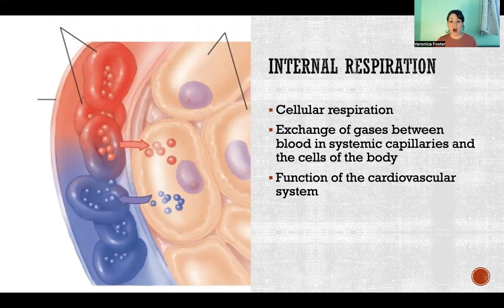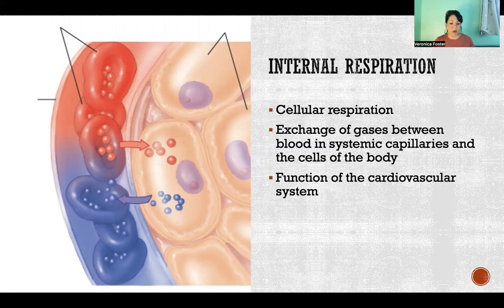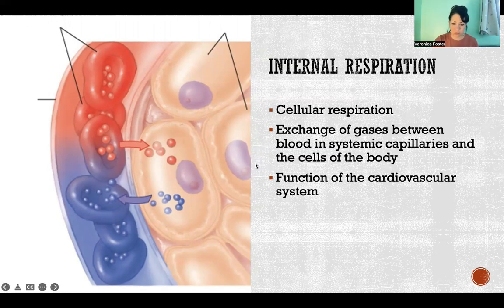Internal respiration is a function of the cardiovascular system. All three steps have to take place for our cells to be properly oxygenated and to dispose of their carbon dioxide waste. The first two steps are functions of the respiratory system, and the final step is a function of the cardiovascular system. Thanks so much for watching this video and hope you have a great day.